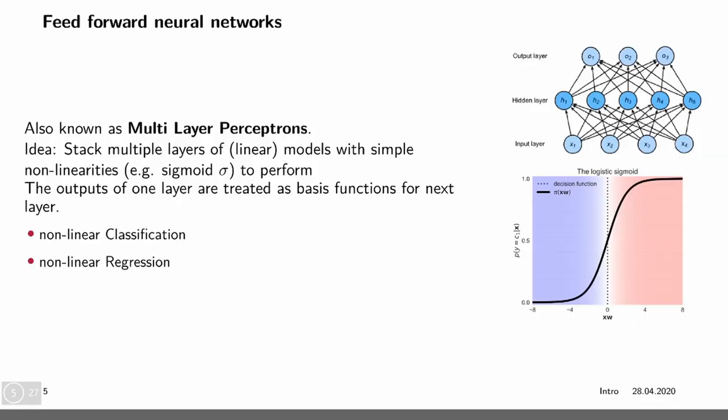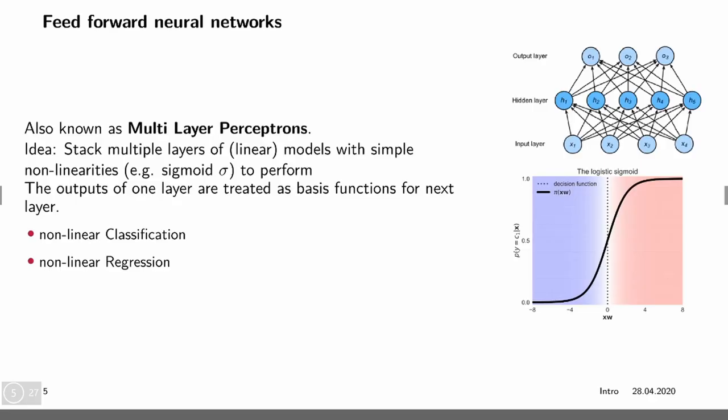This is exactly the trick that neural networks do. They basically iteratively apply non-linearities to functions, multiply a weight, then get something non-linear out and so on until they predict an output. This can be used to get non-linear classification and non-linear regression in a very straightforward way.